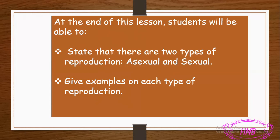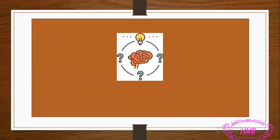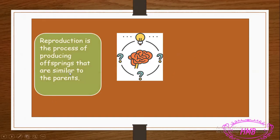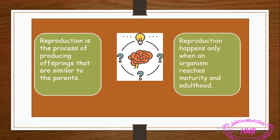At the beginning, let's see what we mean by reproduction. Reproduction means the process of producing offspring that are similar to the parents. It means that when one living thing gives rise to new living things, the new living things will be similar to the parents.